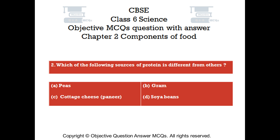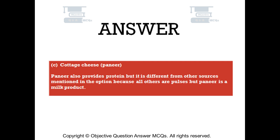The right answer is Option C — Paneer. Paneer also provides protein, but it is different from the other sources mentioned in the options, because all others are pulses but Paneer is a milk product.